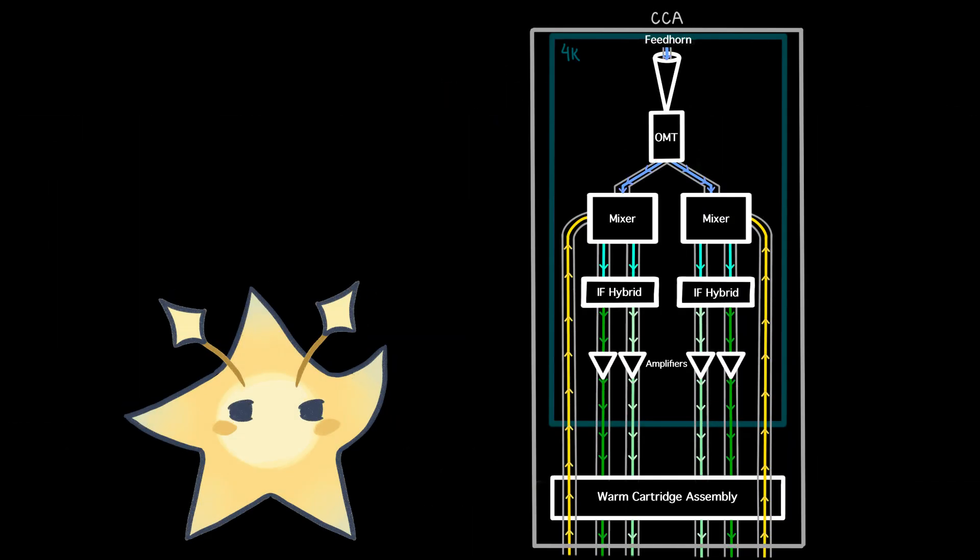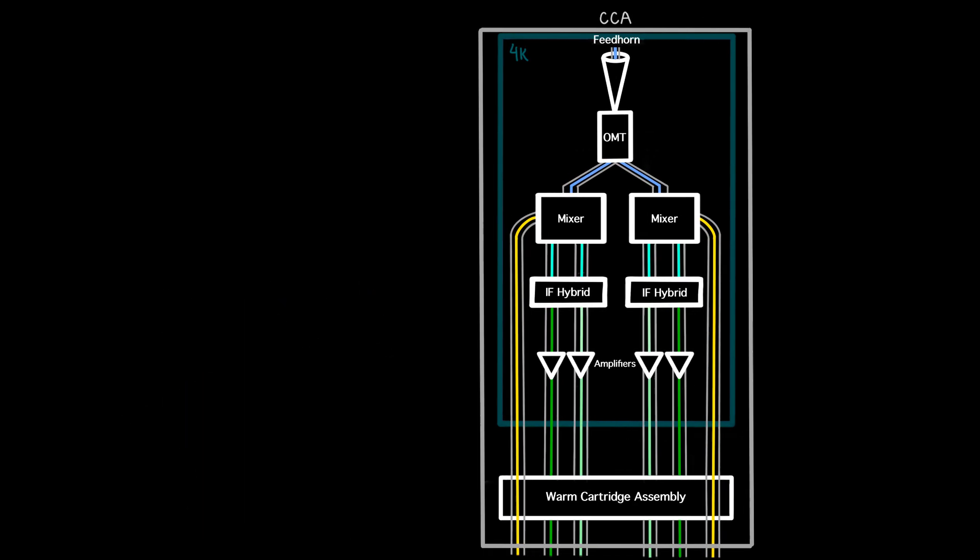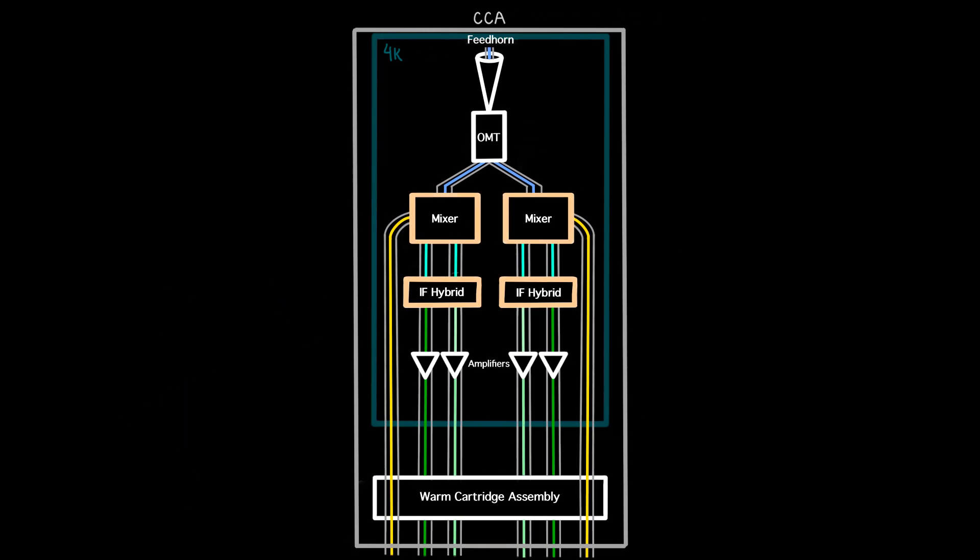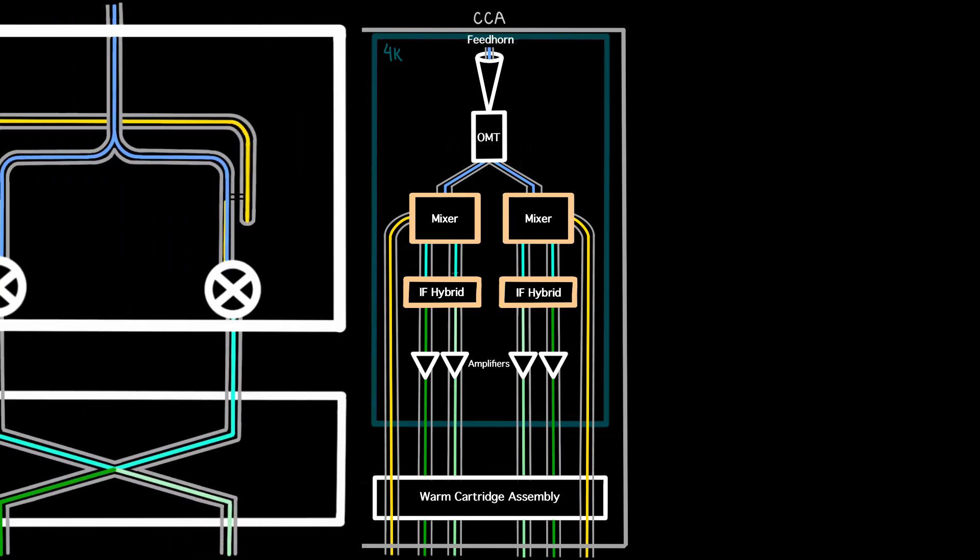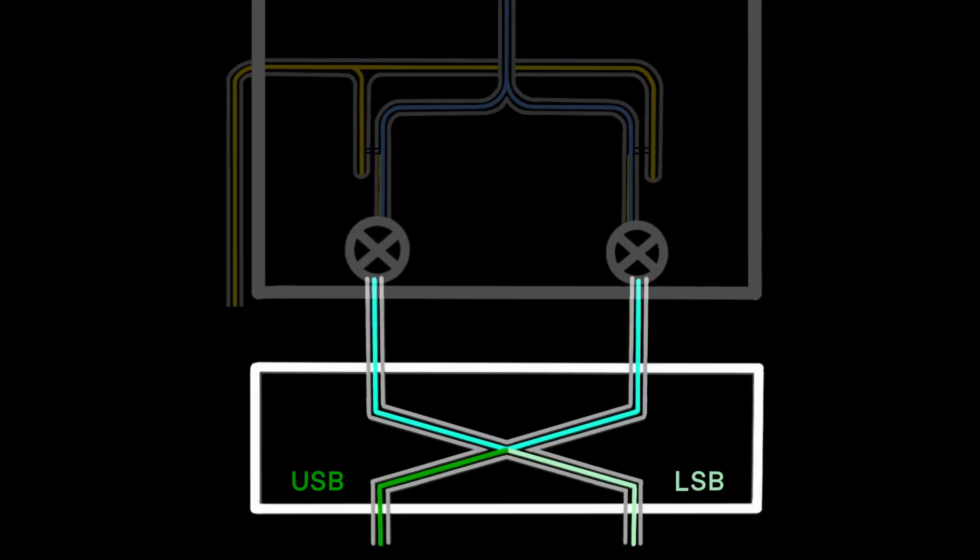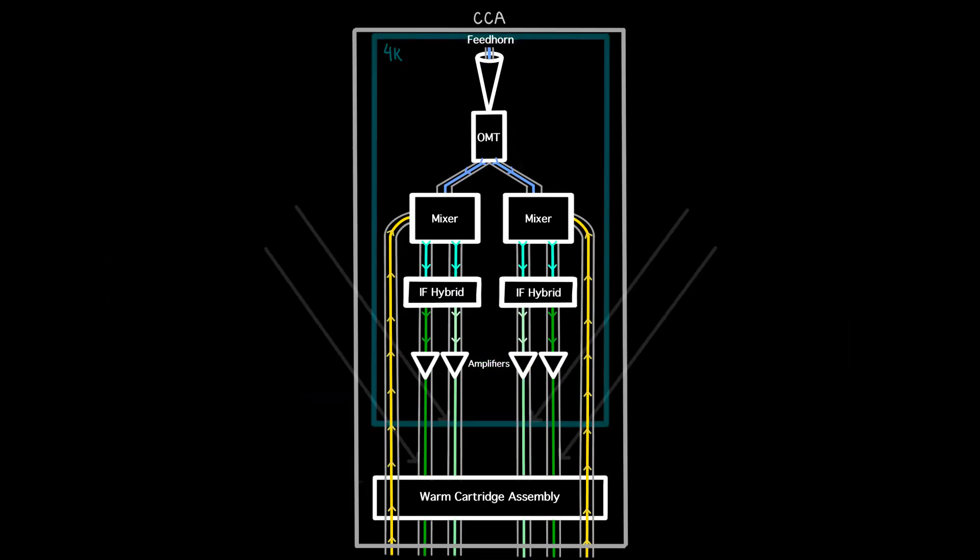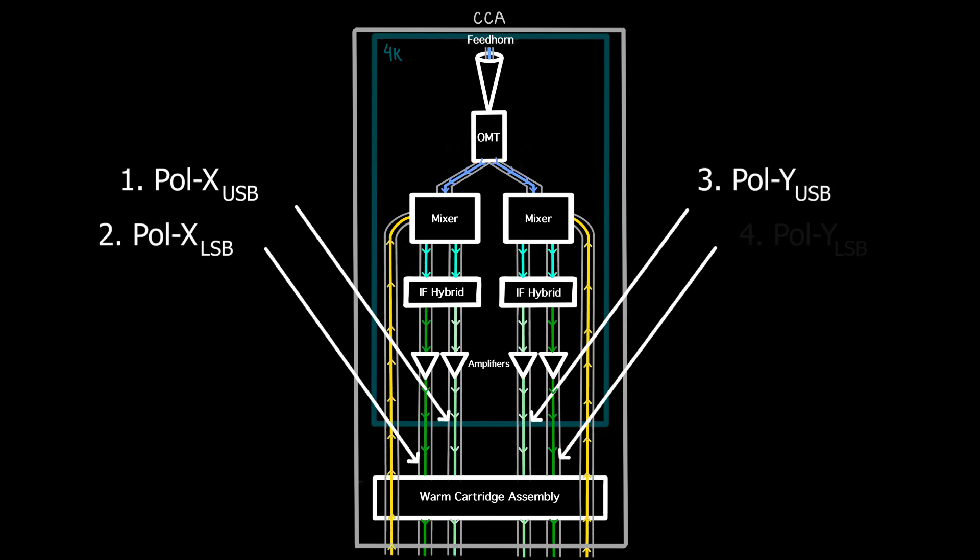Let's continue following the path of our signal as it passes through the receiver. The IF output from each of the two mixer blocks is fed to a device called an IF hybrid, which introduces phase shifts separating the upper and lower sidebands into two different paths, which can then be processed separately.